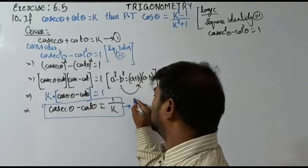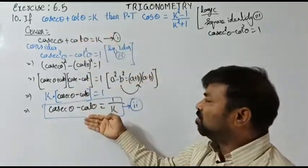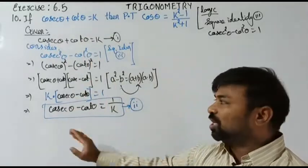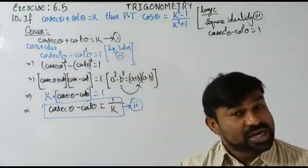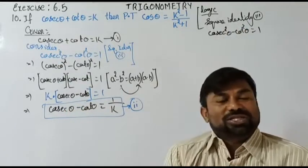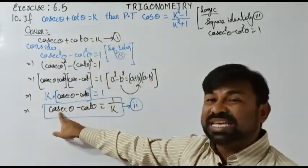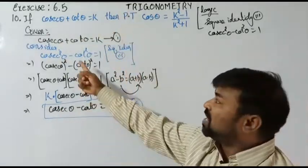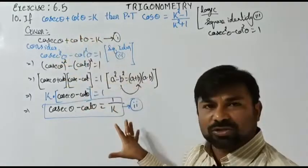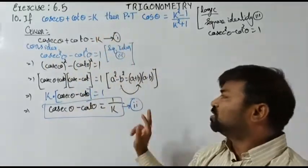This is also a 2-mark question by itself: if cosecant theta plus cot theta equals k, then cosecant theta minus cot theta equals 1/k. The question may also be twisted: if secant theta plus tan theta equals k, then secant theta minus tan theta equals 1/k, using identity 2 — secant squared theta minus tan squared theta equals 1 — in the same style.